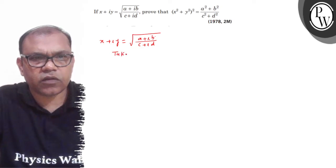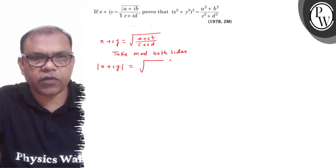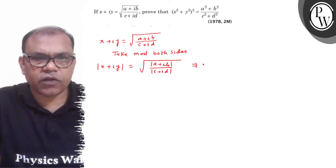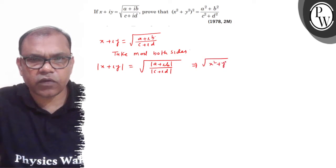Take mod both sides. Aap jab mod logei, left hand side me ajaega mod of x plus iota y, right hand side me ajaega under root of mod of a plus iota b upon mod of c plus iota d. So, joh left hand side ajaega, it will be under root of x square plus y square.